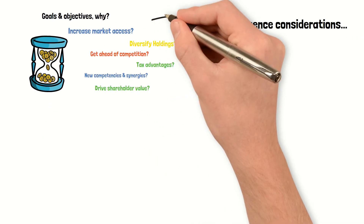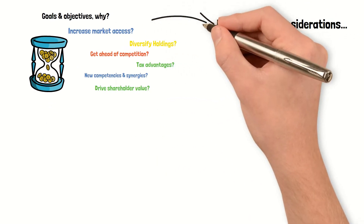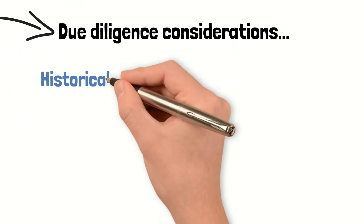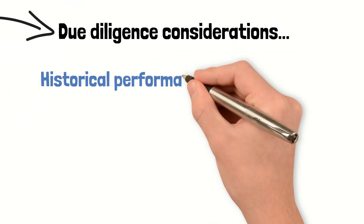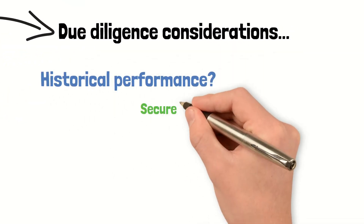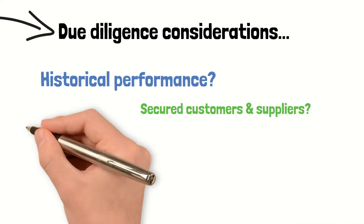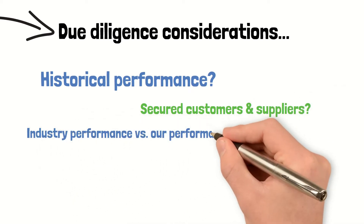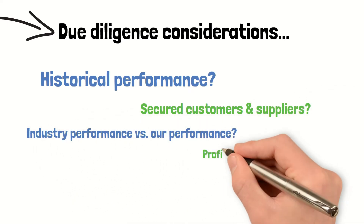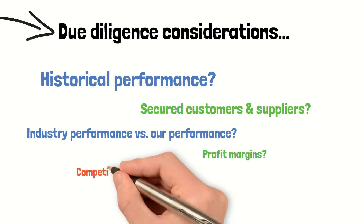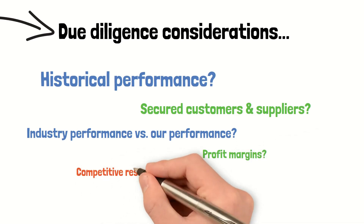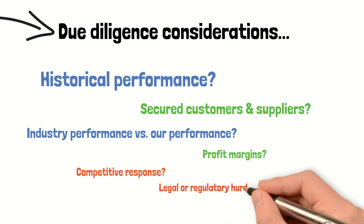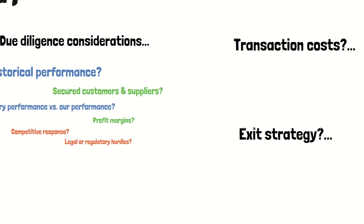Then you want to work through questions that would support a due diligence effort that evaluates the company and industry. How has this company been doing historically? How secured are its customers and suppliers? How is the industry doing overall, and how does our company compare? How are the profit margins? Do we need to watch out for any competitive response if we do this? And are there any legal or regulatory hurdles?